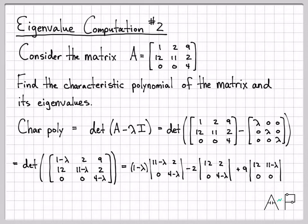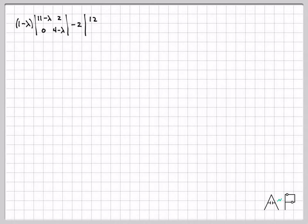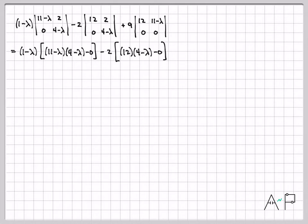All right, now two by two determinants are pretty easy to compute. Given a two by two matrix, it's just this times this minus this times this, that cross pattern you've seen before. So if we keep working through this, we can write down these two by two determinants. There's the determinant of the first two by two matrix minus two times the determinant of this second one, which is 12 times quantity four minus lambda minus two times zero is zero. And then plus nine times zero minus zero, because 12 times zero is zero minus quantity 11 minus lambda times zero is also zero.